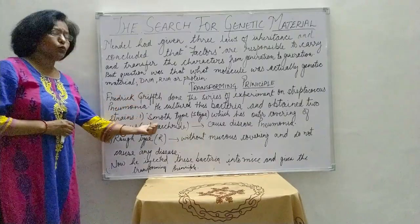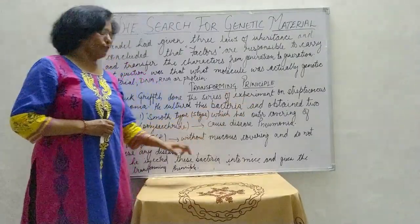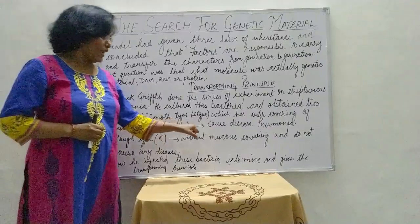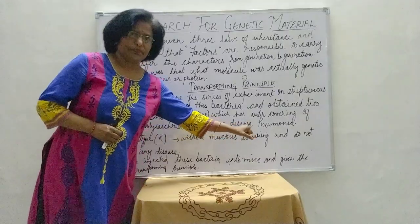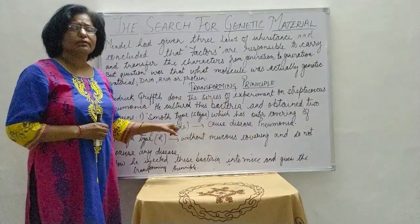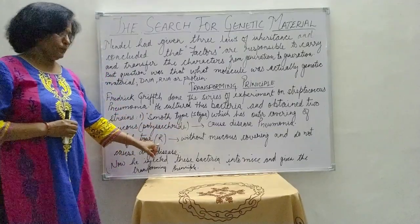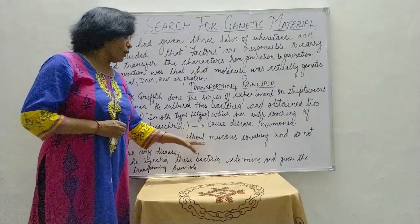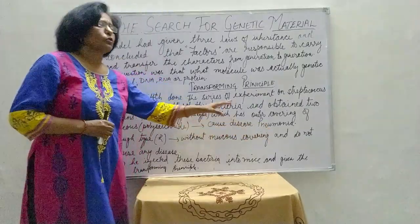The first strain is the smooth type, denoted as S type, which has an outer covering of mucus — that is, polysaccharide. This S type bacteria causes the disease pneumonia and is called a virulent bacteria. The second is the rough type of bacteria, which does not have a mucus covering and is not able to cause disease.